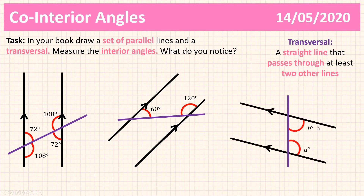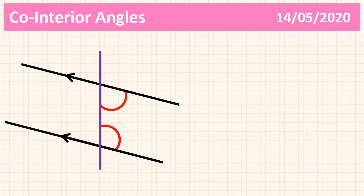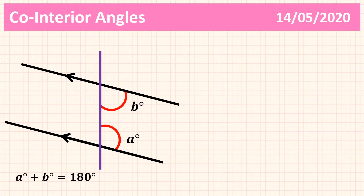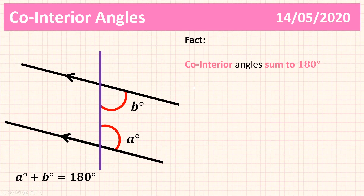So then what would A and B be? Pause the video and have a think. The rule is that if I've got A and B, and we can see from the other angles — I had 72 and 108, and 60 and 120 — well A plus B must sum to 180, because we can see that in our other diagrams. 72 add 108 gives me 180, and 60 add 120 gives me 180. And that's because of this angle fact.